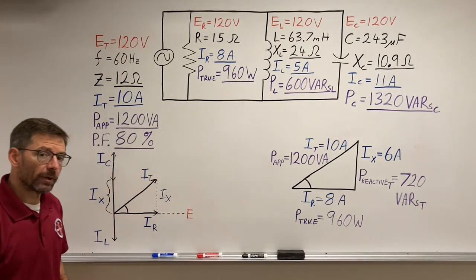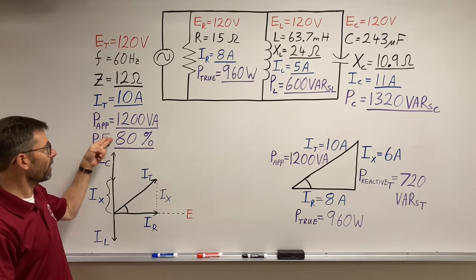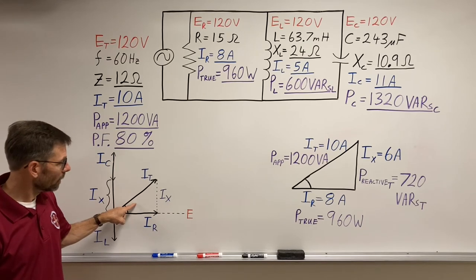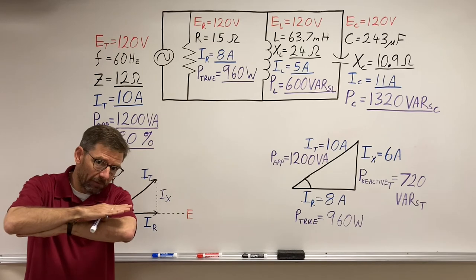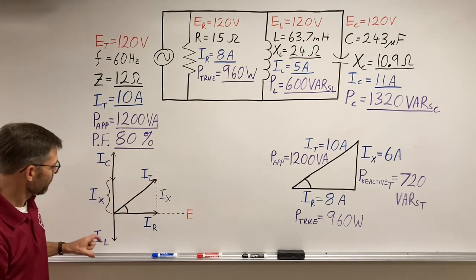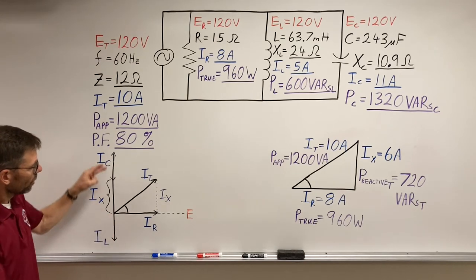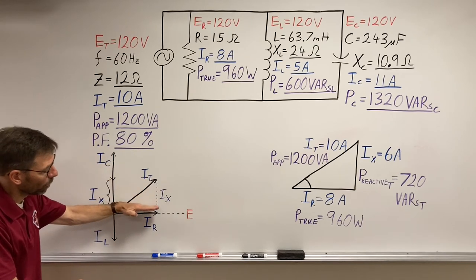Now there's a relationship between the power factor and this angle we recall. The lower the angle, the better the power factor, because there's less reactants. If I added more inductive current or took away some of my capacitive current, I would lower the difference. So how do we get that angle?